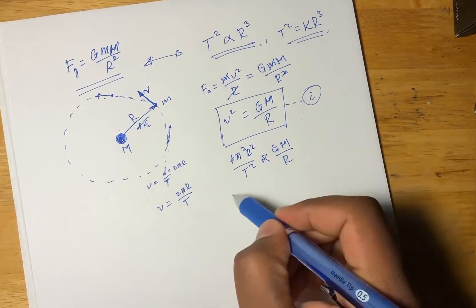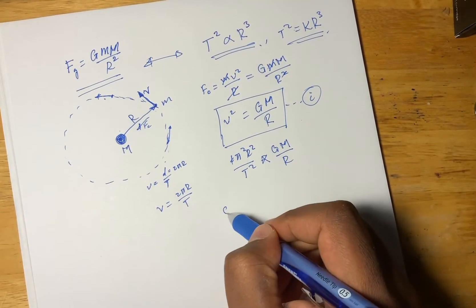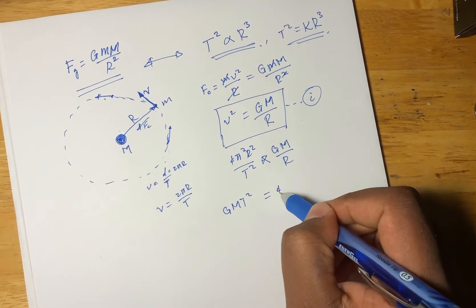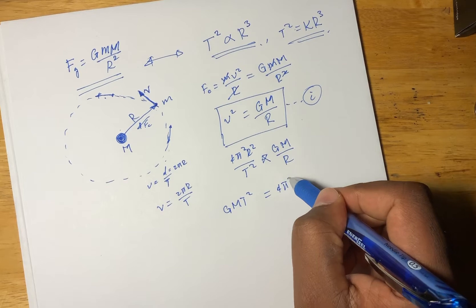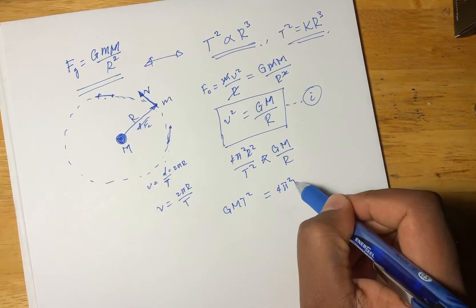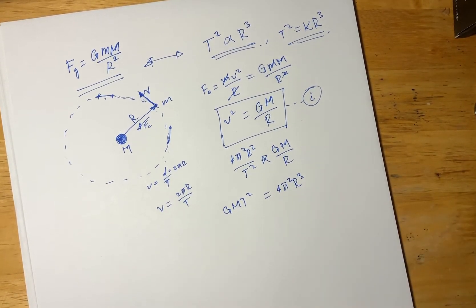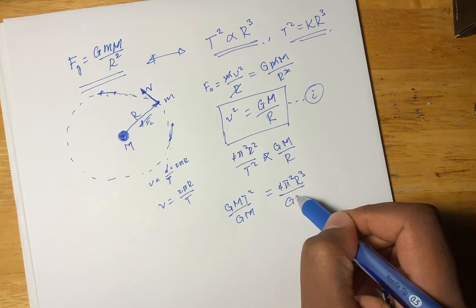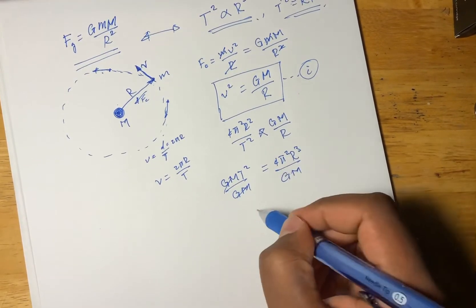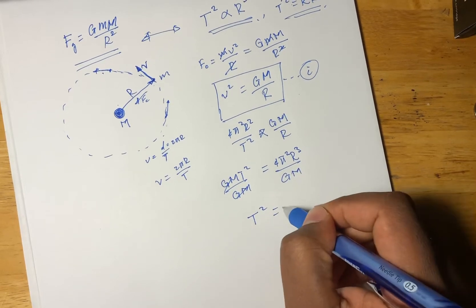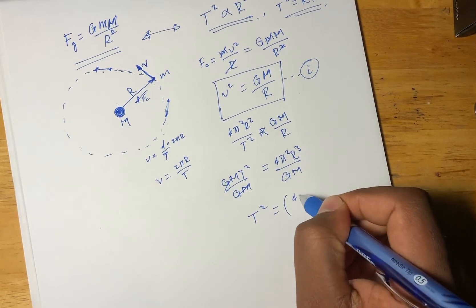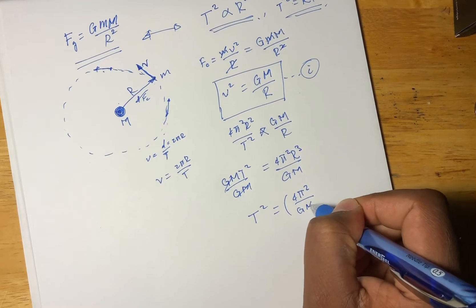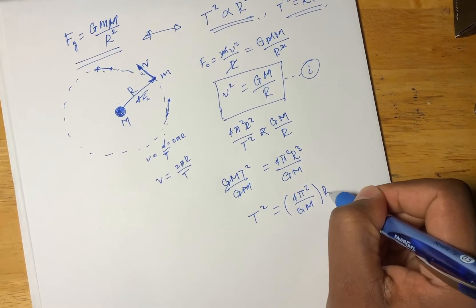Here we multiply through — r² times r gives r³. So T² equals 4π² over GM times r³.